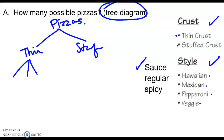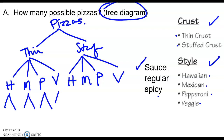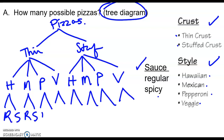From each crust option, you branch into four toppings: Hawaiian, Mexican, pepperoni, or veggie — giving eight branches at that level. Then from each topping, you branch into regular or spicy sauce, so you get regular and spicy listed under each topping combination. There are three levels of branching corresponding to the three choices.